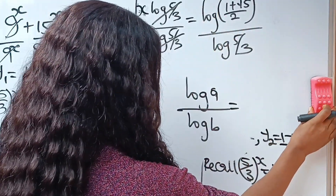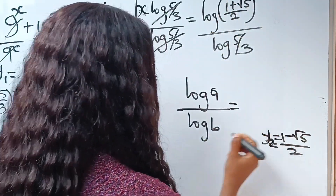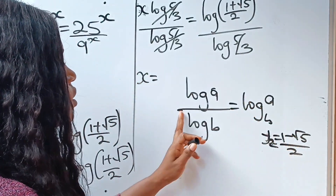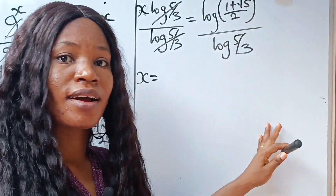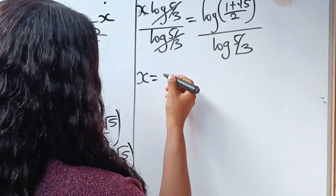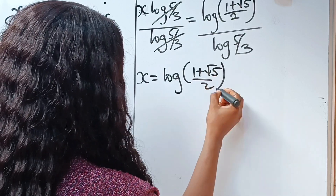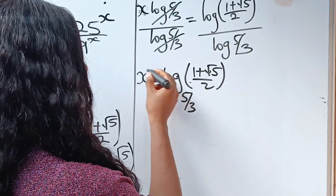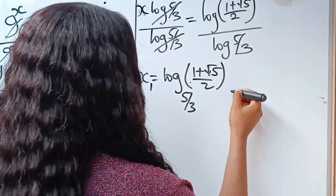Therefore, we have that x is equal to log of 1 plus root 5 divided by 2, base 5 over 3. This is the first value of our x.